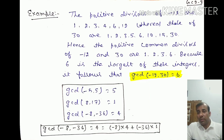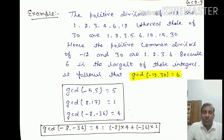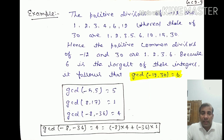For example, the positive divisors of minus 12 are 1, 2, 3, 4, 6, 12. The positive divisors of 30 are 1, 2, 3, 5, 6, 10, 15, and 30. So the positive common divisors of minus 12 and 30 are 1, 2, 3, and 6, since these values divide both 12 and 30.